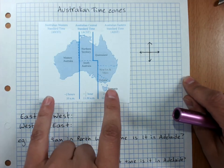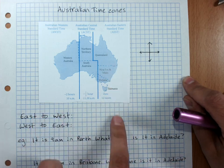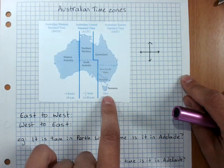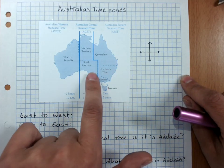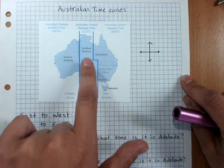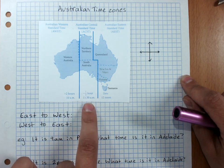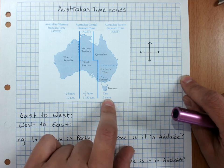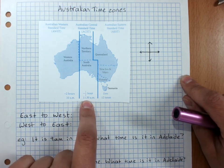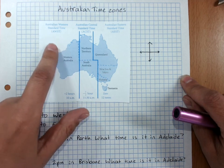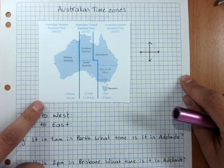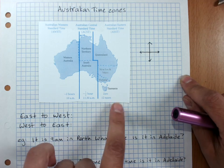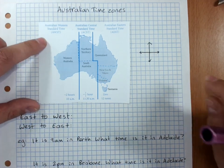In Australia we've got three main time zones. If we think of Australian Eastern Standard Time as zero, then our relationship to the next one, Australian Central Standard Time, is minus half an hour. So if it was midday here in Canberra, then it would be 11:30 in the morning in the middle of Australia. And Australian Western Standard Time is two hours less than where we are, so it would be 10 a.m. in Western Australia.